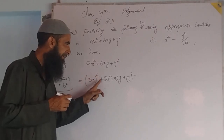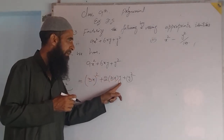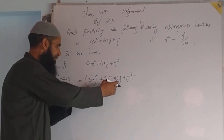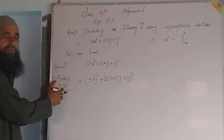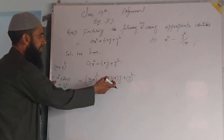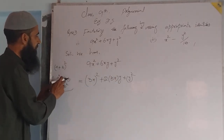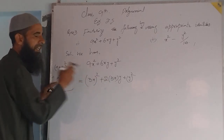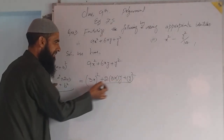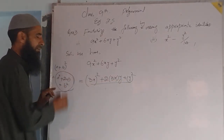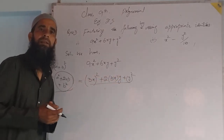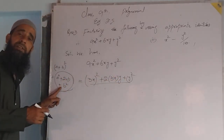Using the identity (a + b)² = a² + 2ab + b², we have here: 3x squared plus 2 into 3x into y plus y squared. Comparing this with the identity: we have a squared as 3x squared, 2ab as 2 into 3x times y, so a equals 3x, and b squared as y squared, so b equals y.